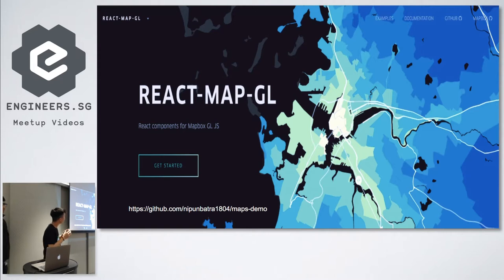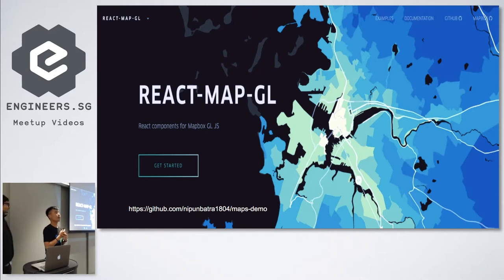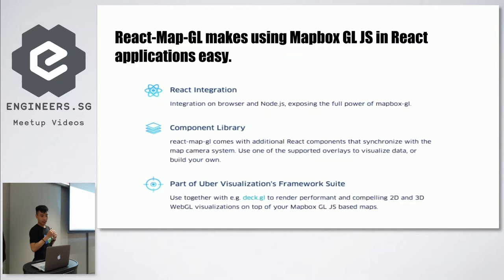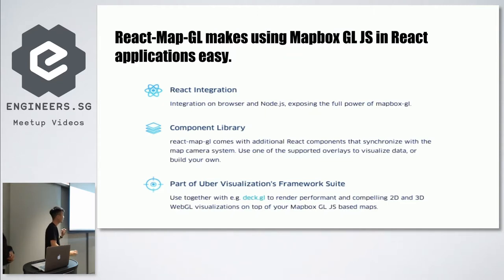Basically, this is what React MapGL is — it's a React component for Mapbox GL. GL stands for Graphics Library. As mentioned, it is a class component — plug and play, very simple. I will get to the attributes shortly.